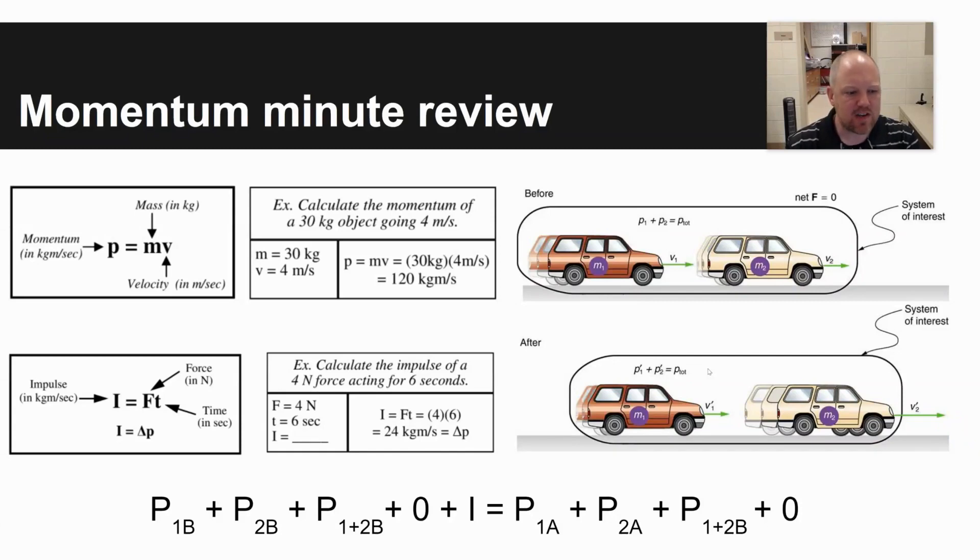Impulse is a change in momentum. So I equals delta P. And impulse is a product of force times time. So calculate the impulse of a 4 newton force acting for 6 seconds. Impulse equals force times time, or 4 times 6 is 24 kilogram meters per second.